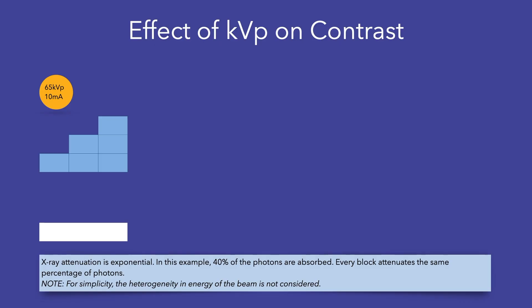Let's look at the effect of KVP on contrast. We will image a series of steps. Starting with exposure settings of 65 KVP and 10 mA, let's assume that there are 1000 photons incident on the object, and that every block absorbs 40% of the photons. X-ray attenuation is exponential, and thus we can calculate the number of photons that would exit at the base of the object. The relative ratios of these photons define contrast and make our radiographic image.